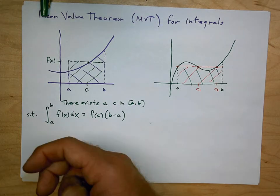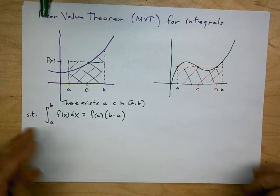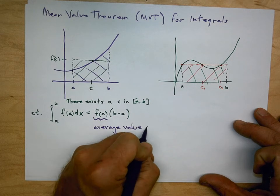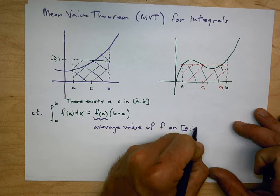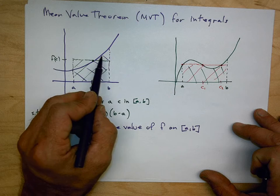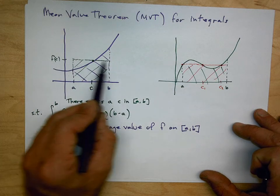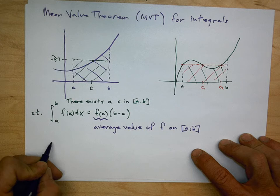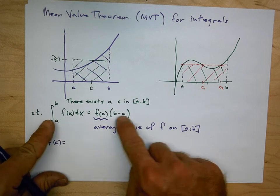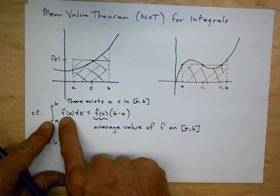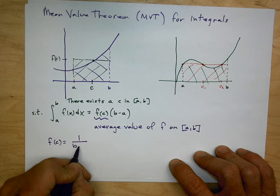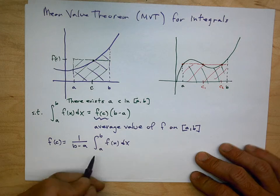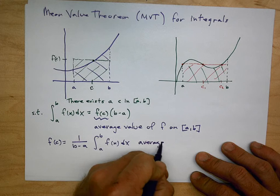We call f(C) the average value of f on the interval [A, B]. If you think of averaging as leveling off, we can level off the function and that's the average value over the interval. We can find that average value by rearranging the equation: divide both sides by (B − A), giving us (1/(B−A)) times the integral from A to B of f(x) dx. That's how we find the average value of a function on a given interval.